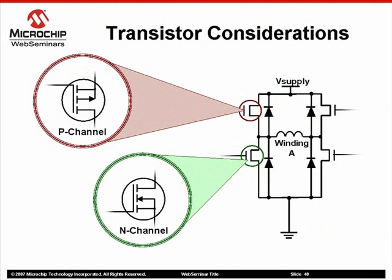In the preceding drive circuit example, enhancement type MOSFETs are used. Any transistor could potentially be used, such as bipolar and IGBT transistors. However, MOSFETs are easier to control since they are voltage-controlled devices. MOSFETs also offer faster switching times than the IGBT, thereby reducing switching power losses. In the above example, the MOSFETs in the upper half of the H-bridge are P-channel type, and the lower half are N-channel type.